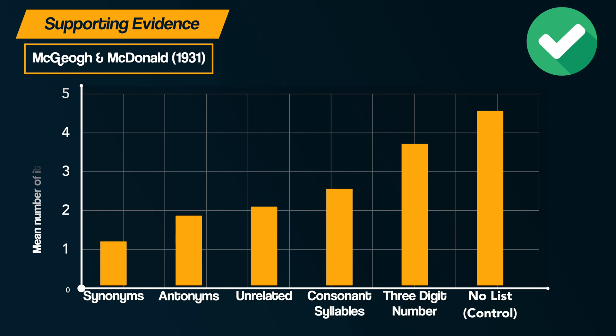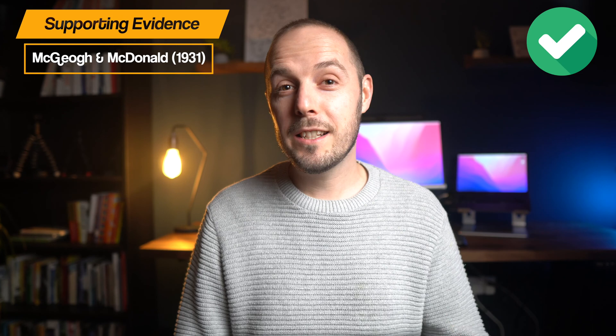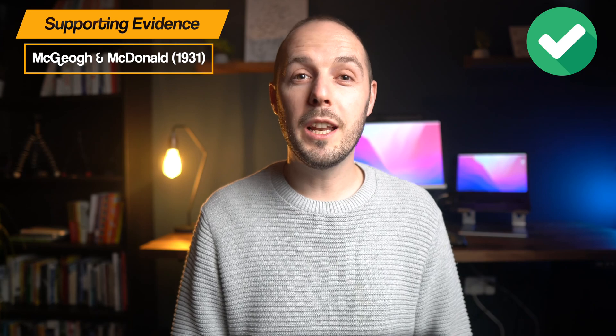Here's what they found. When participants were asked to recall the original 10 words, recall was the worst — or we could say forgetting occurred the most — when the new list was similar to the original old list of words. The synonyms caused the most confusion. This study nicely demonstrates how interference can cause forgetting, and particularly so the more similar the material is.